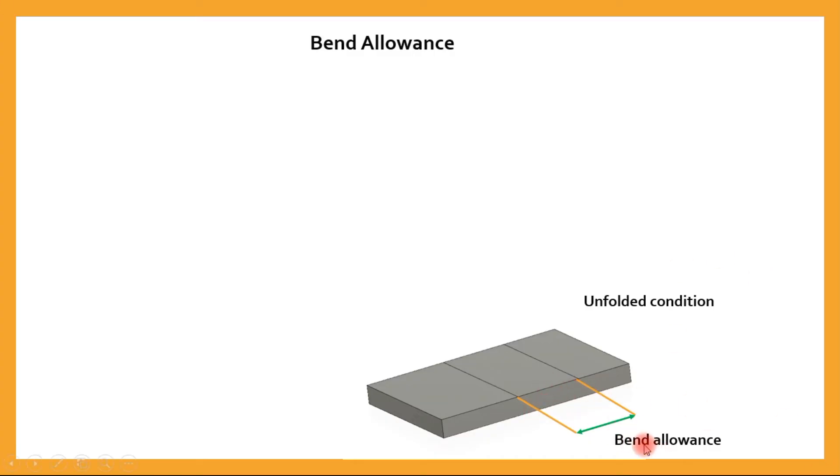So that is called bend allowance. As you can see here, there is some distance which is shown as bend allowance, and that same distance, once it is bent, will be in form of an arc. So the length of this arc is called the bend allowance.